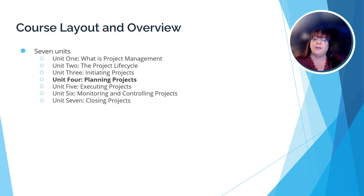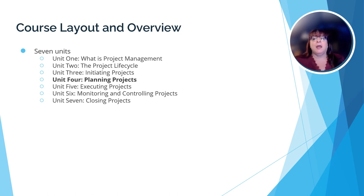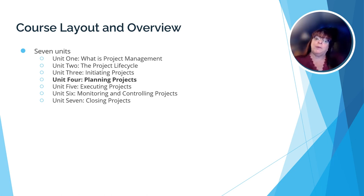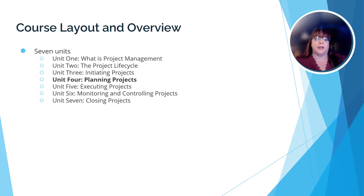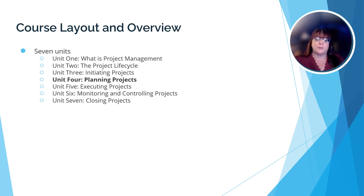There are seven units in this course. In Unit 1, we learned what a project is, who makes the decision to take a project on, and what the triple constraint theory is. In Unit 2, we were introduced to the project lifecycle. In Unit 3, we looked at the initiating phase. In Unit 4, we're going to look closely at what goes into planning a project once it's been chosen.